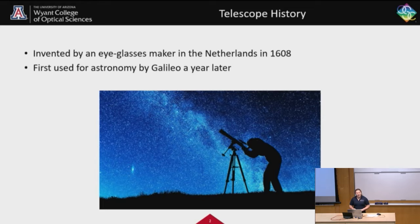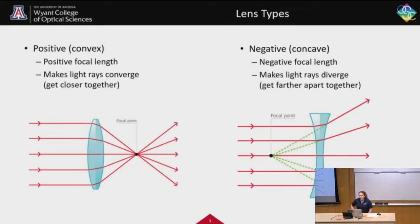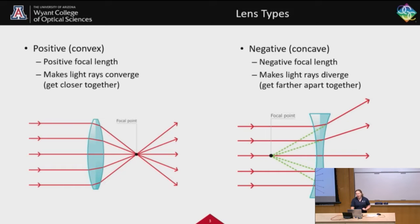Telescopes were first used for astronomy by Galileo a year later. To make a telescope, you combine positive and negative lenses. Positive lenses have a positive focal length, meaning their focal point is after the lens itself, and they converge light rays, making them get closer together. Negative lenses have a virtual focal point before the lens so that the light passing through gets further apart.